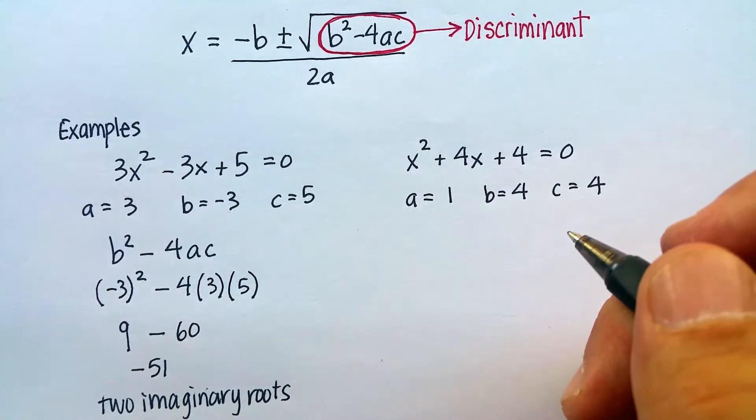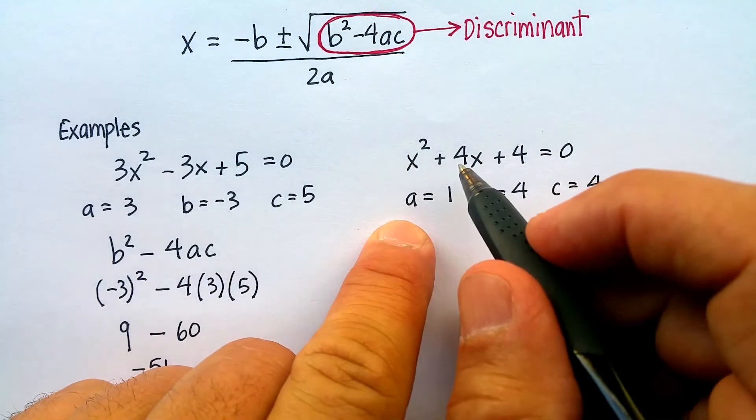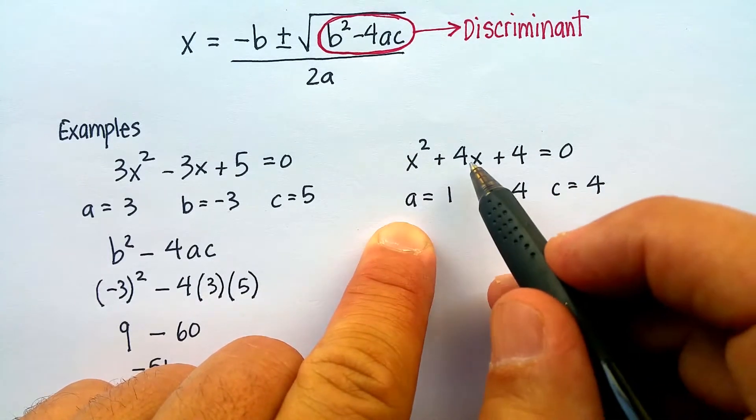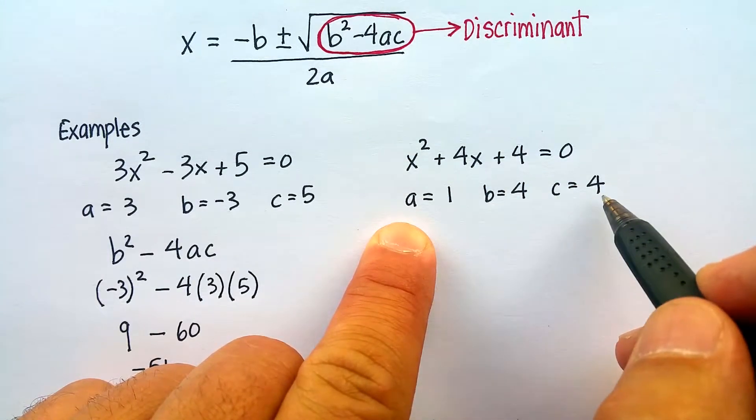Now let's go to this one over here. x squared plus 4x plus 4 equals 0. Looks like my a is 1, my b is 4, my c is 4.